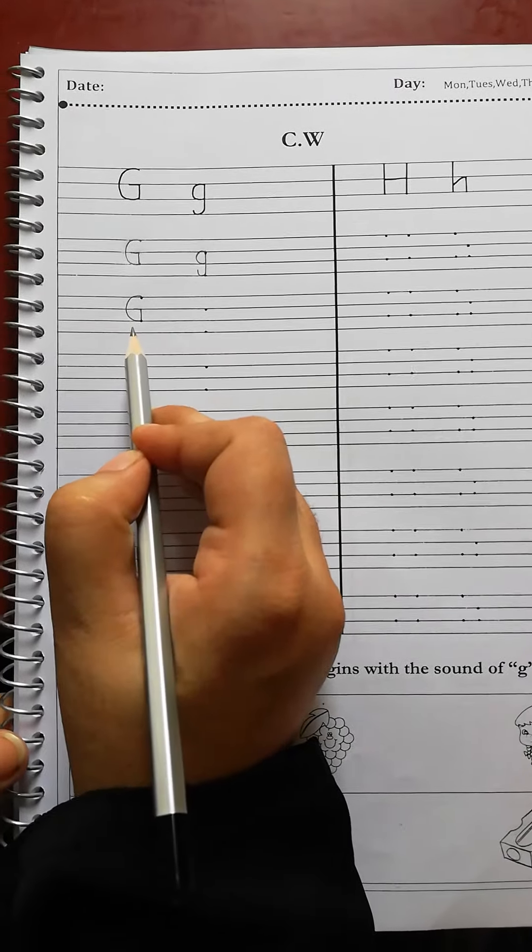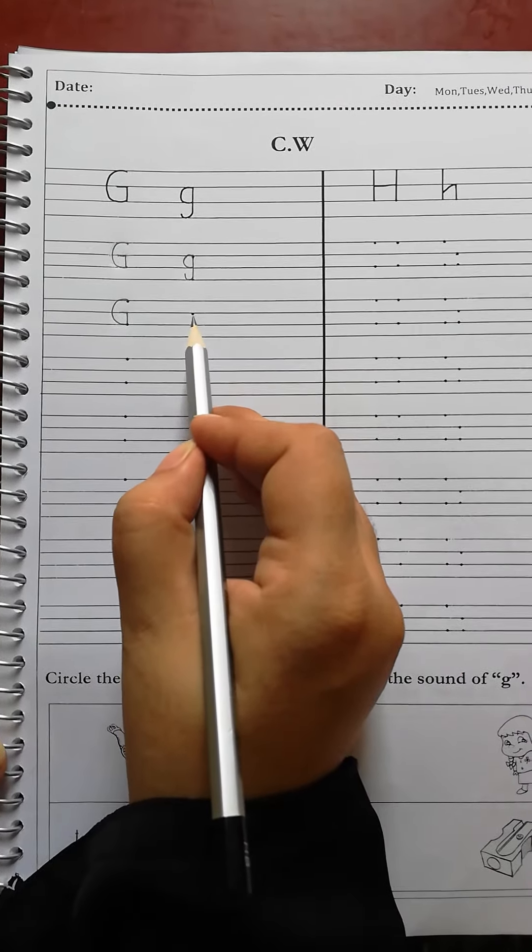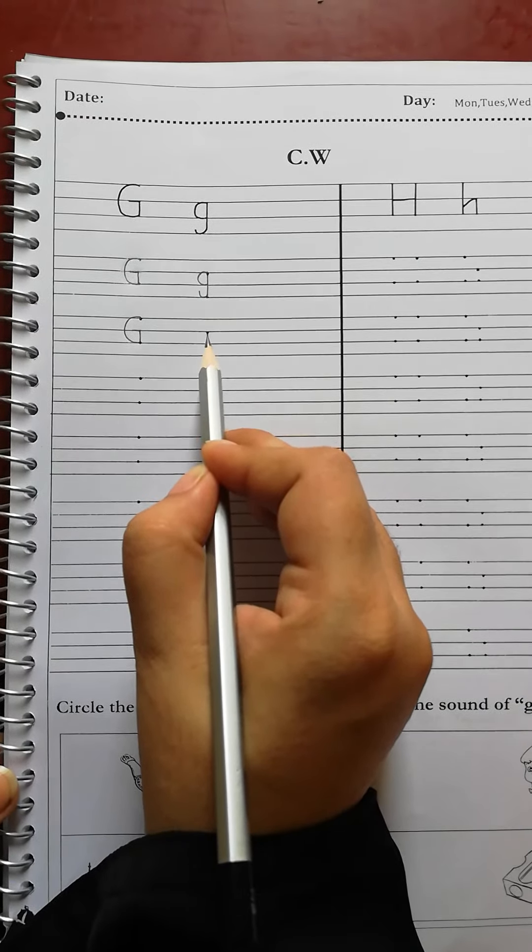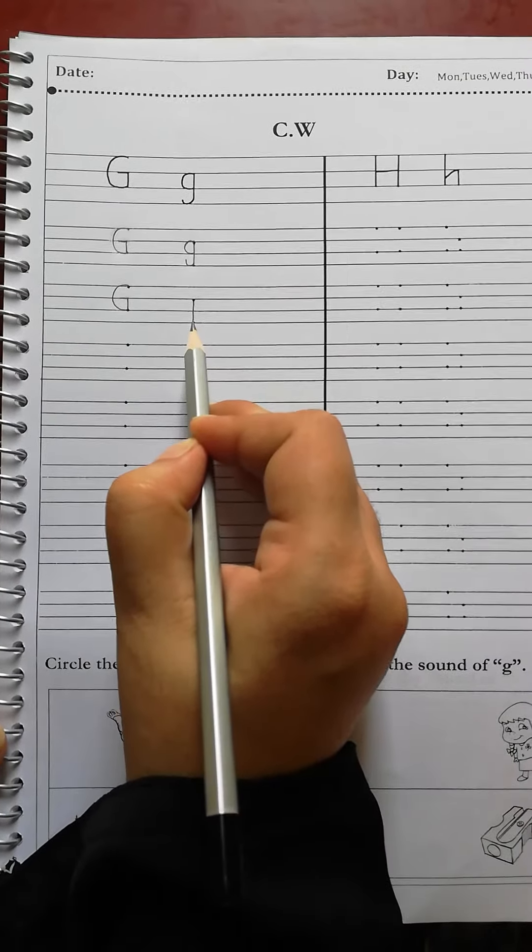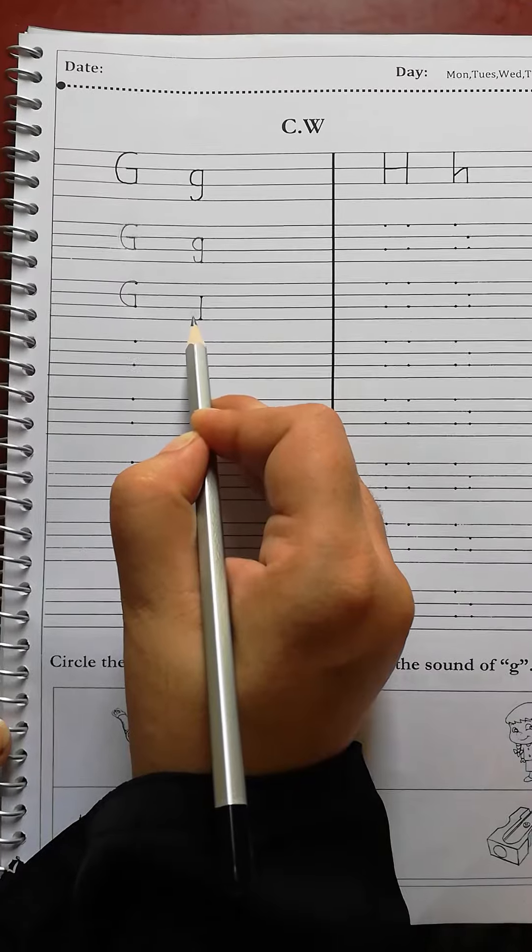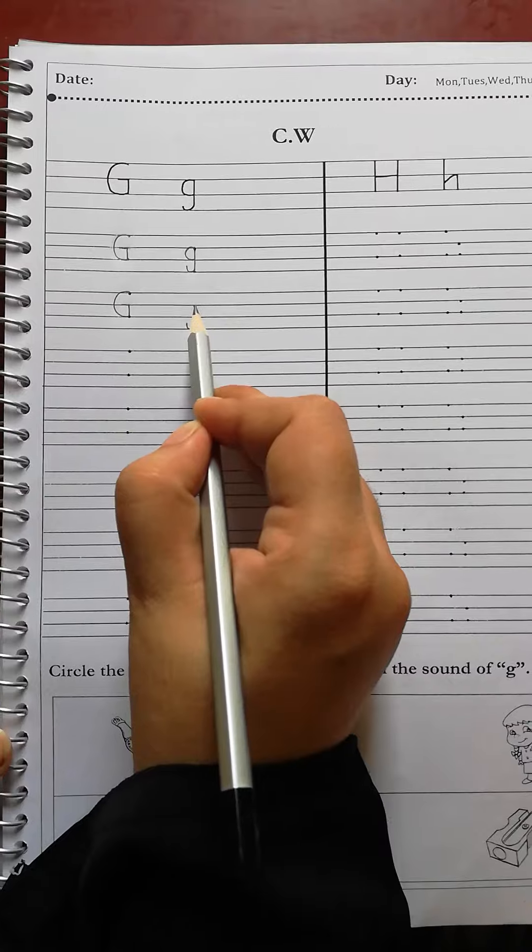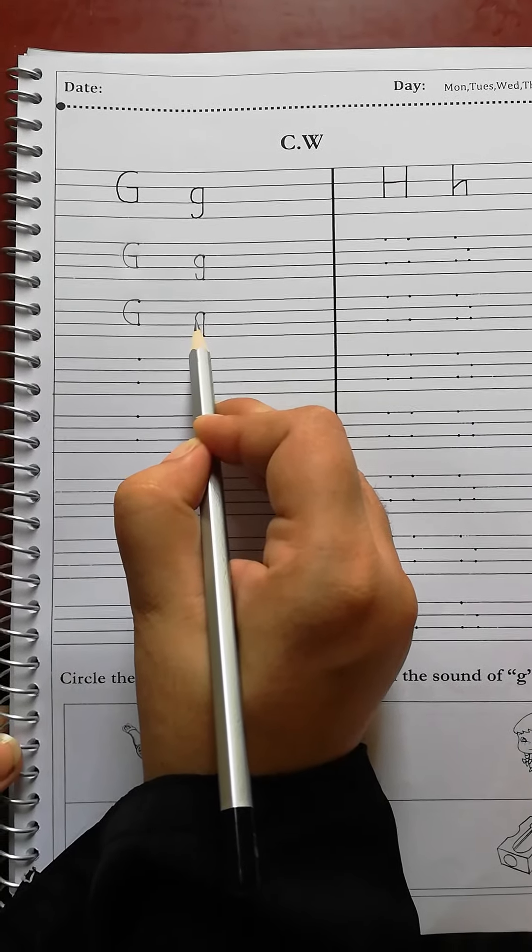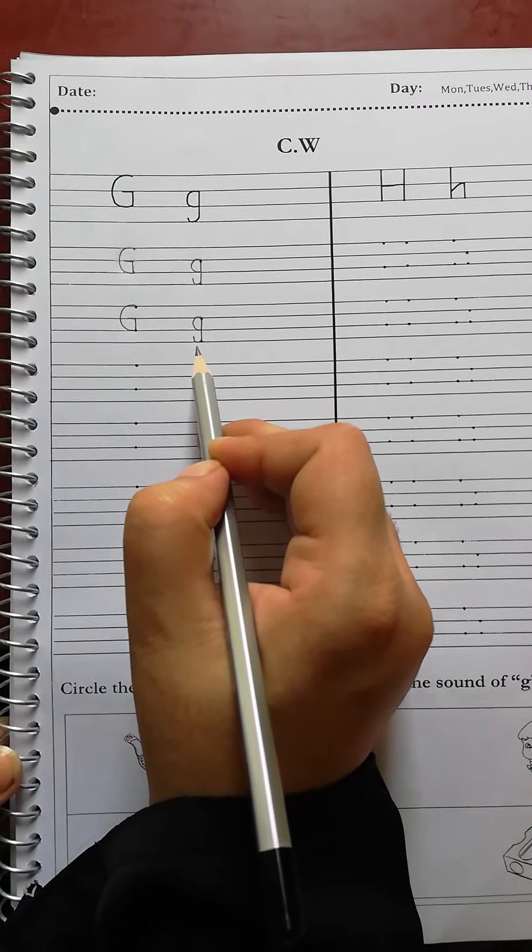Now we will write small g. First, we put the pencil on the top dot and draw a line to the second dot, then make a small round. Then we put the pencil on the top dot and make a small belly between the two lines. This is small g.